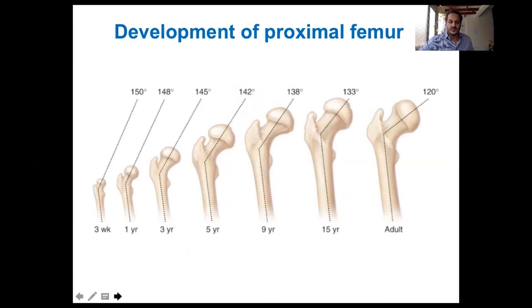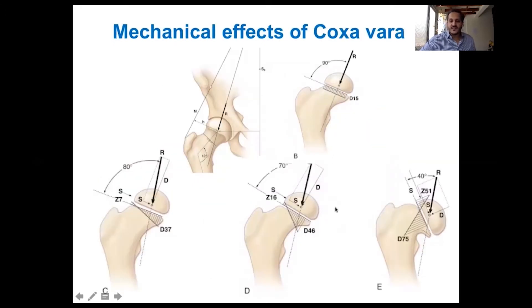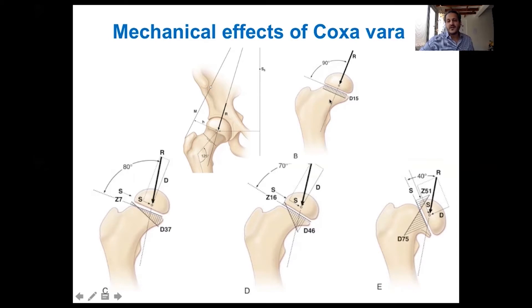If a patient has coxa vara, this causes some mechanical effects on the growing bone. When the person stands, the compressive force of body weight and the abductor muscles — which also cause some compression at the center of the head — produce a resultant compressive force acting on the center of the head. Normally, the orientation of the head physis is perpendicular to this resultant compressive force, so the forces acting on the whole physis are uniform and the physis grows uniformly, causing elongation of the neck.